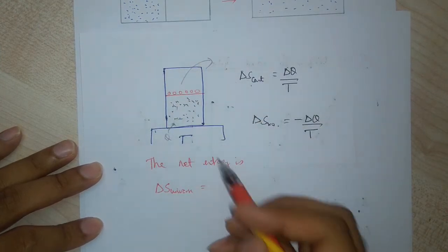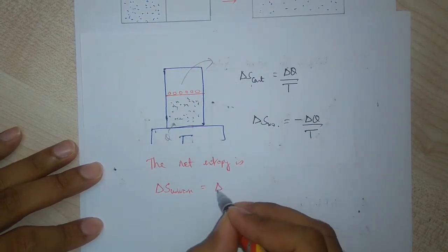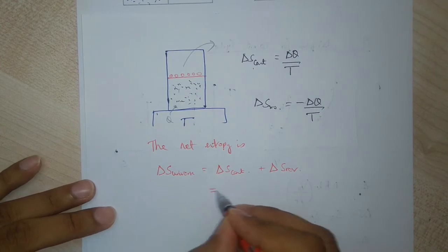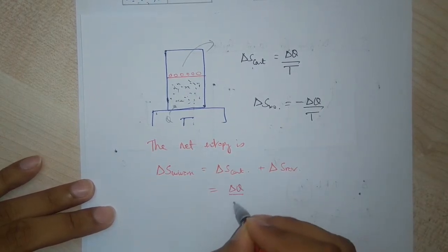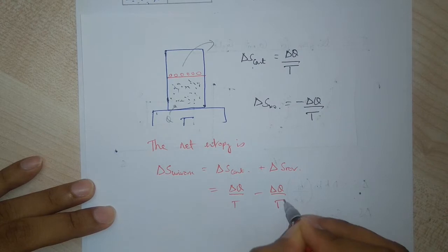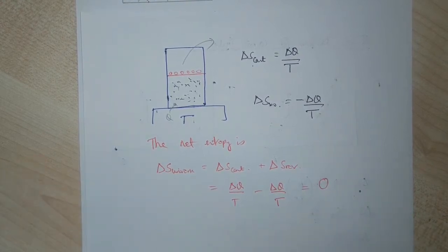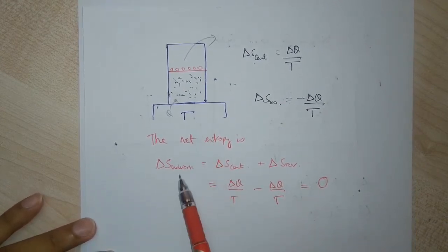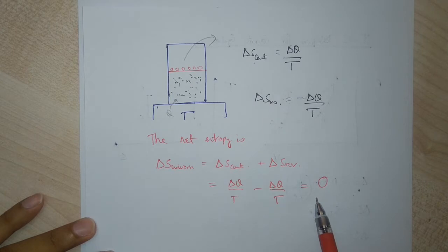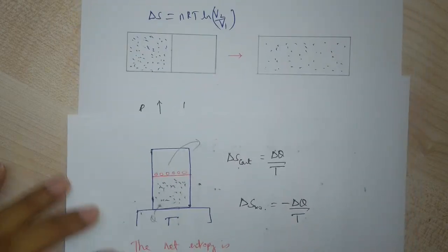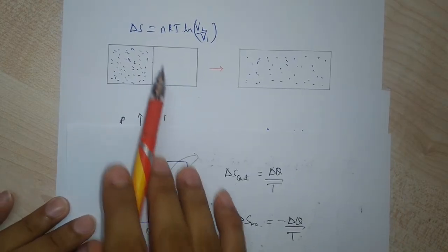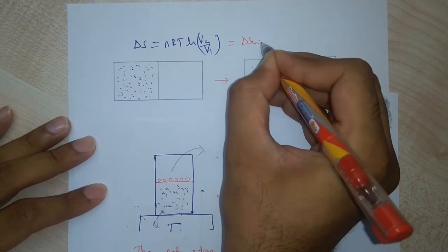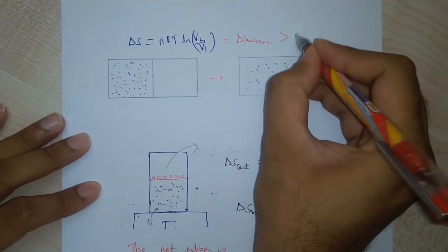The entropy of the universe equals the change in entropy of the container plus the change in entropy of the reservoir. Plugging in the values, we see these cancel and the net change in entropy is zero. So when we expand the gas isothermally, the entropy of the universe is equal to zero. But for free expansion, the entropy of the universe is greater than zero.